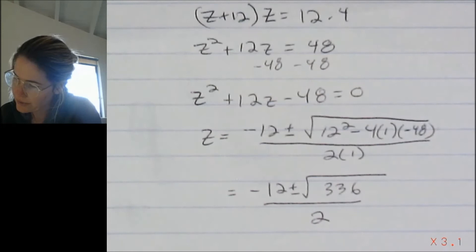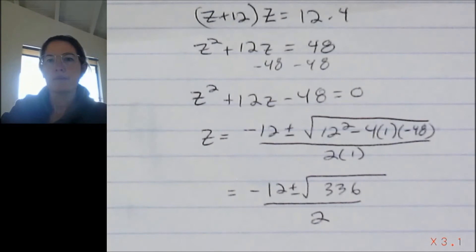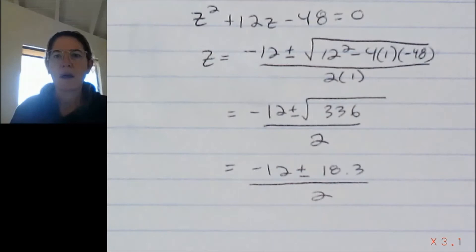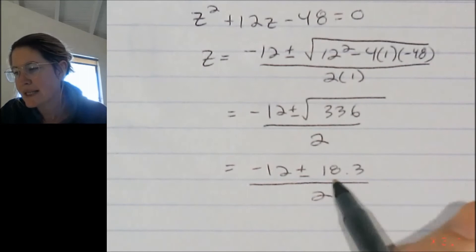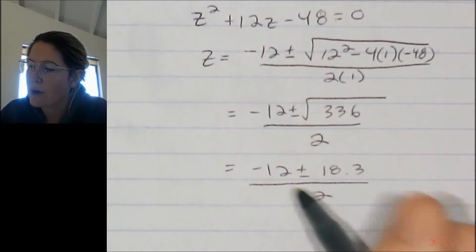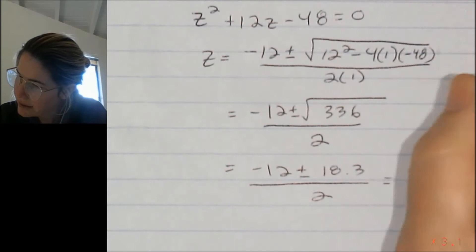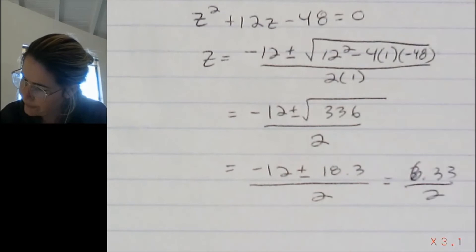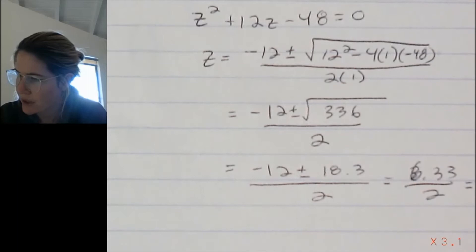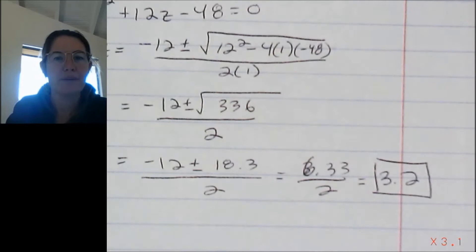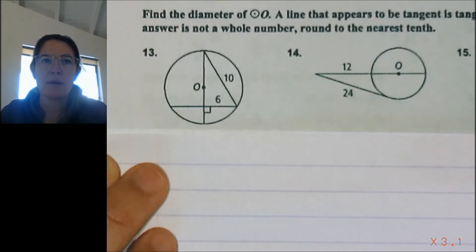And the square root of 336 is 18.3. Okie dokie. And so 18.3, if we were to minus this we'd get a negative answer. We can't have a negative solution for a segment length. So we're going to just add positive 12 and positive 18.3. And that's going to give us 30.3 divided by 2, which is 15.15. Wait, no, negative 12 plus 18.3 is 6.3 divided by 2, which is 3.165. So we'll just round it to 3.2. Definitely an algebra review.